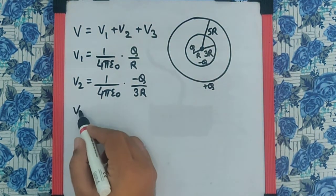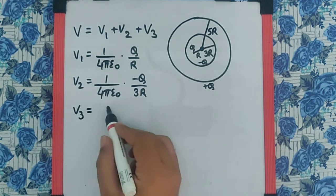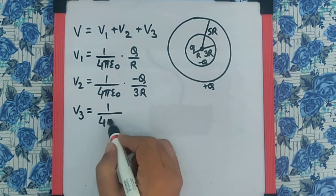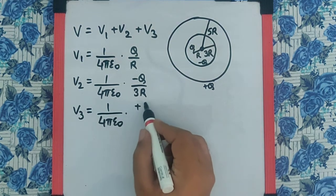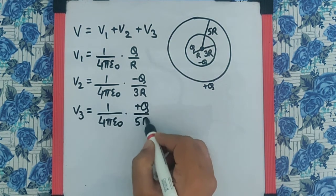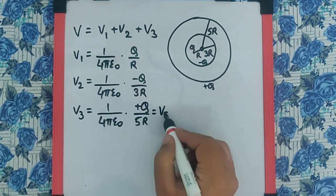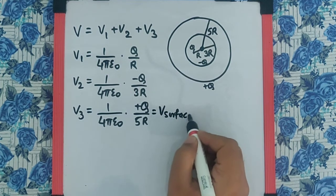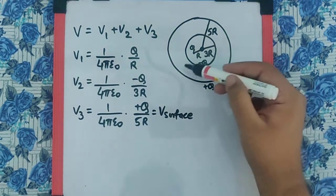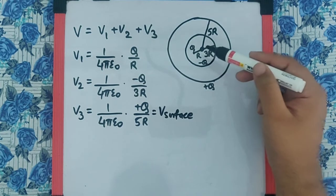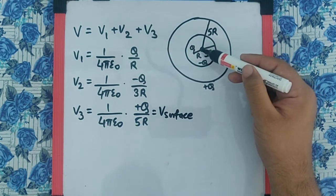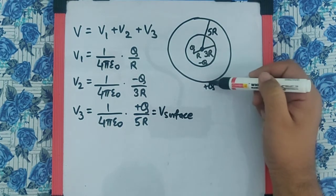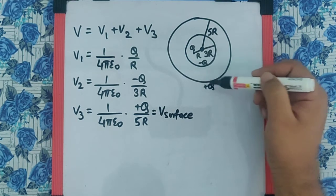But V3 is nothing but 1 upon 4pi epsilon 0, equal to plus q by 5r, which is actually equal to V at the surface. Because that is the point which is inside a spherical shell. So, inside the spherical shell for the charge outside, the potential is equal to that on the surface.